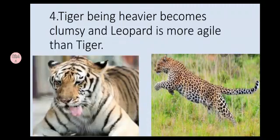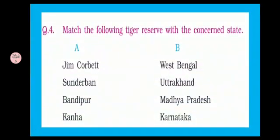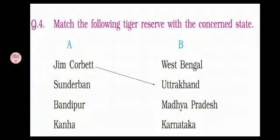Now our next question is: match the following tiger reserves with their concerned states. The first option in Column A is Jim Corbett — think about it, kids. Jim Corbett is in Uttarakhand. Our next option is Sundarbann — yes, Sundarbann is in West Bengal.